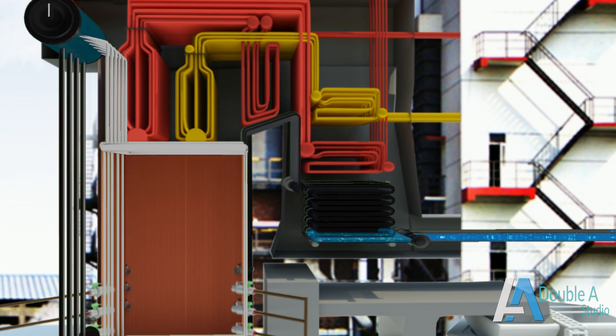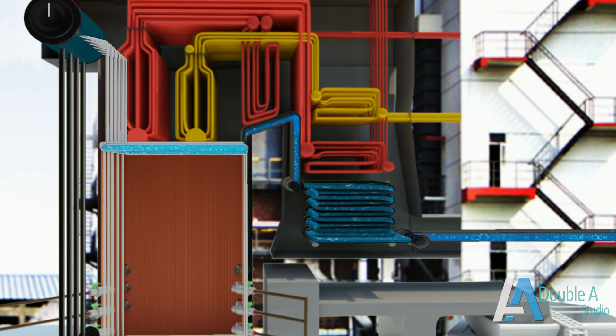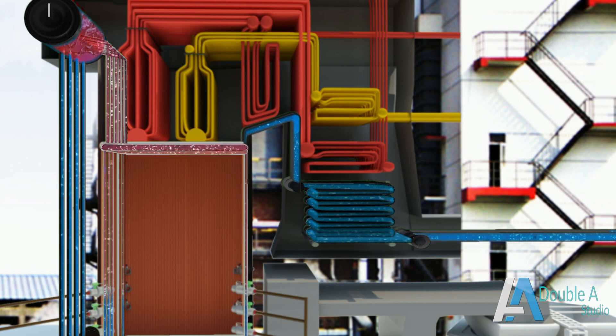Next we come to ring headers. Ring header is a group of headers which receives water through downcomers and supplies to the boiler drum through water walls or risers.